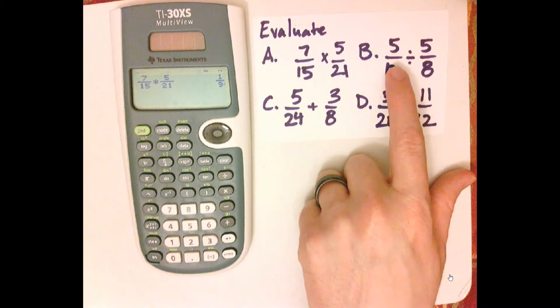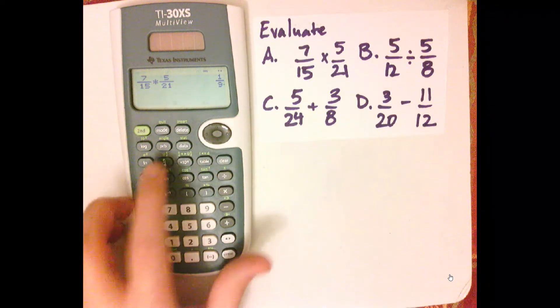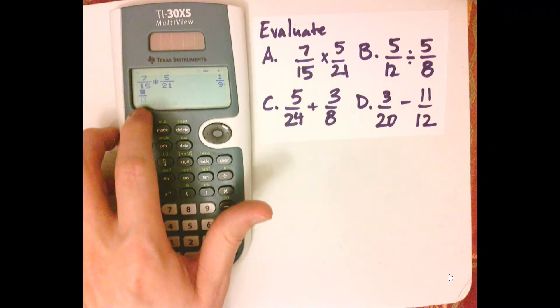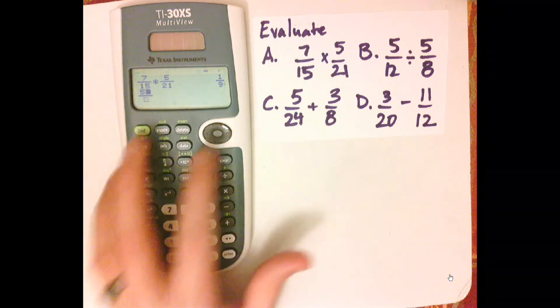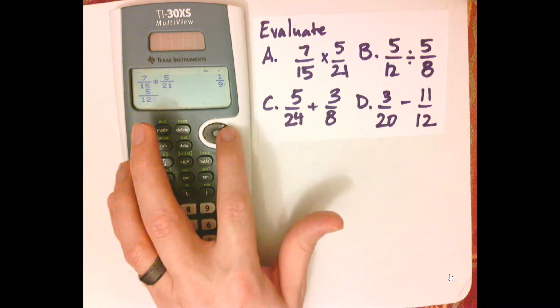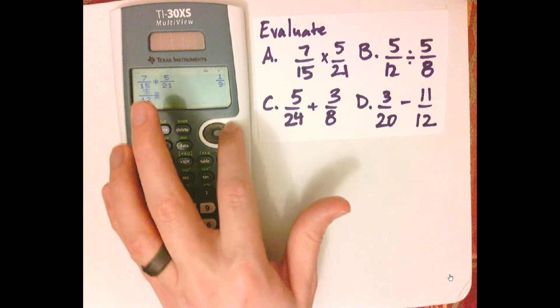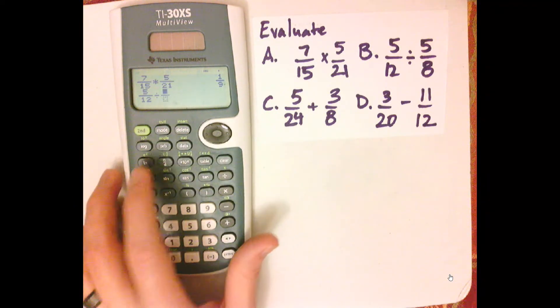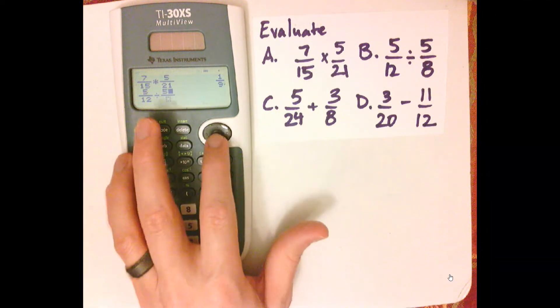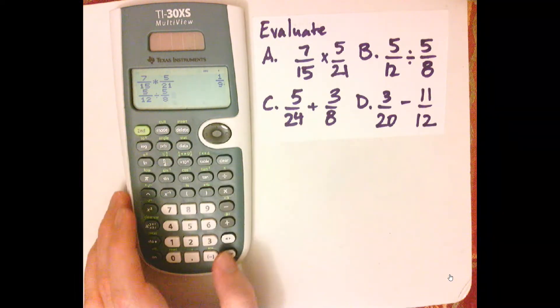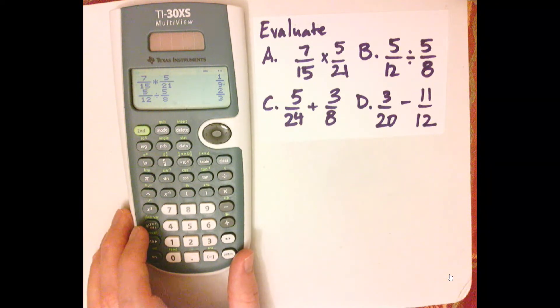So what you can also do is you can just push that, and then see it makes the boxes, and you can fill in the boxes. So 5, 12, use the arrows to navigate, I'm pushing down and then over, divided by, 5, push down, 8, Enter, 2 thirds.